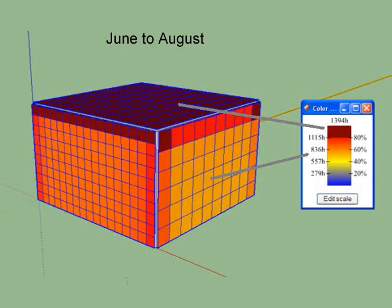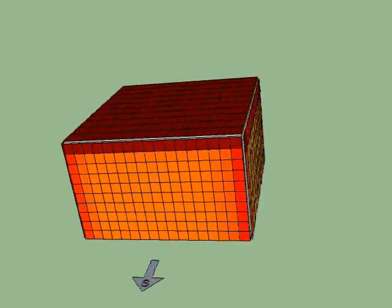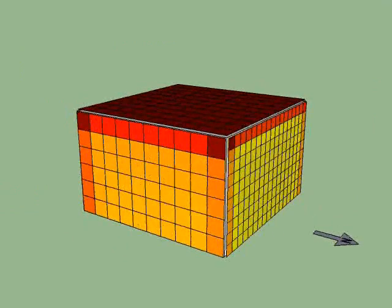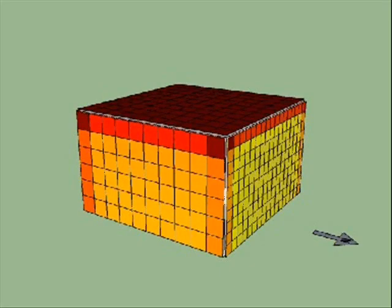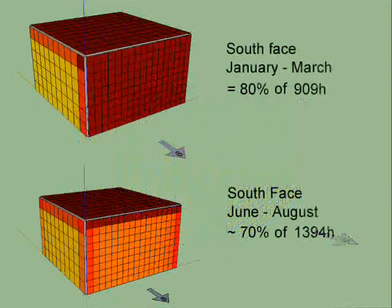We will now focus on the summer time when we don't want to have the sun heat getting into the house. We will simulate from June to August with a total of 1,394 hours cumulative on these three months. During this summer period, we easily see that the roof is taking the main percentage of solar exposure, while the south is getting 70% and east and west sides are taking around 50%.